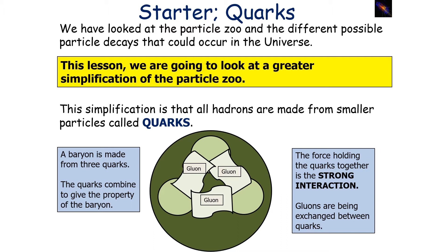This lesson, we're going to look at a greater simplification of the particle zoo. This simplification is that all hadrons are made from smaller particles that we call quarks. A baryon is made from three quarks, and the quarks combine to give the property of the baryon. The force holding the quarks together is the strong interaction.